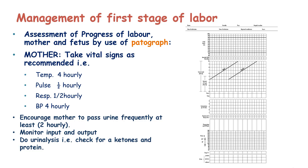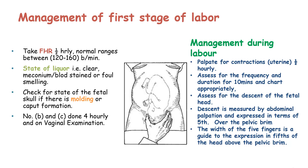We encourage mothers to pass urine frequently, at least two times per hour. We monitor the fluid input and output, and we do a urinalysis to check for any presence of ketones and protein in urine. The presence of proteins in urine can be an indicative feature of preeclampsia. For fetal monitoring, we check the fetal heart rate every 30 minutes — the normal range is 120 to 160 beats per minute. We check the state of the liquor: whether it is clear, meconium-stained, blood-stained, or foul-smelling. We check for the state of the fetal skull for any moulding or caput formation, and these checks are done four-hourly on vaginal examination.